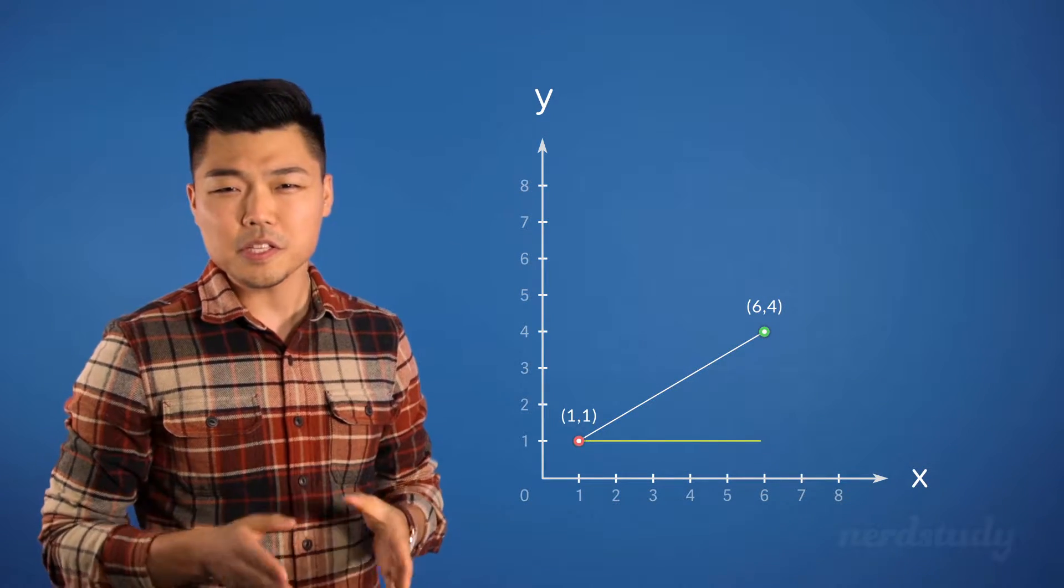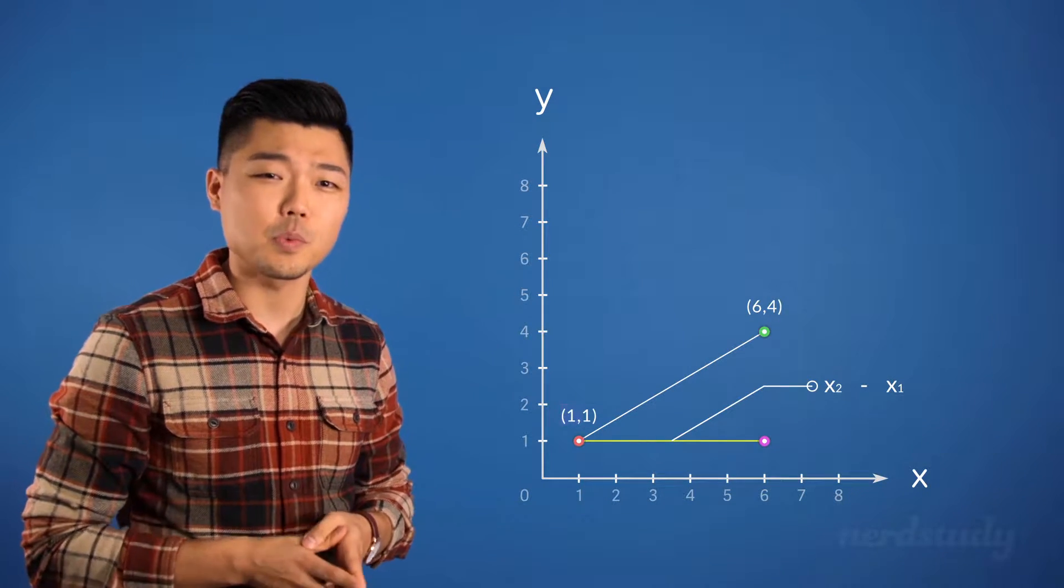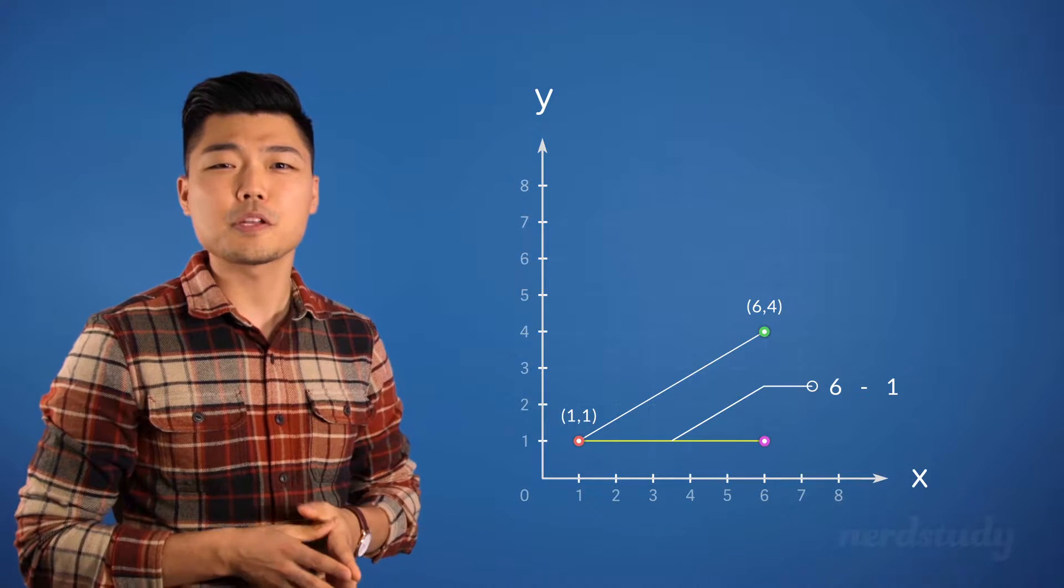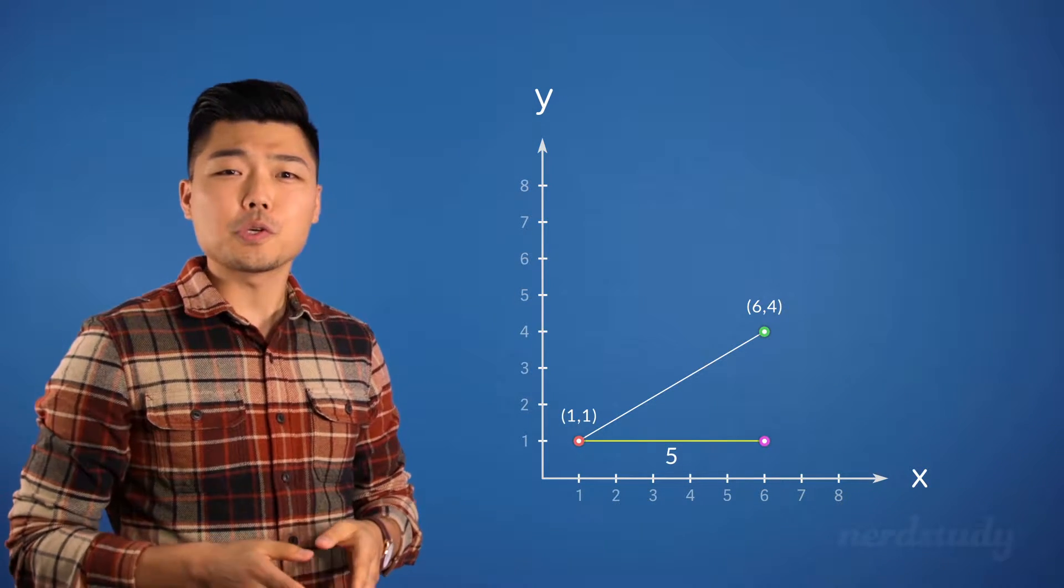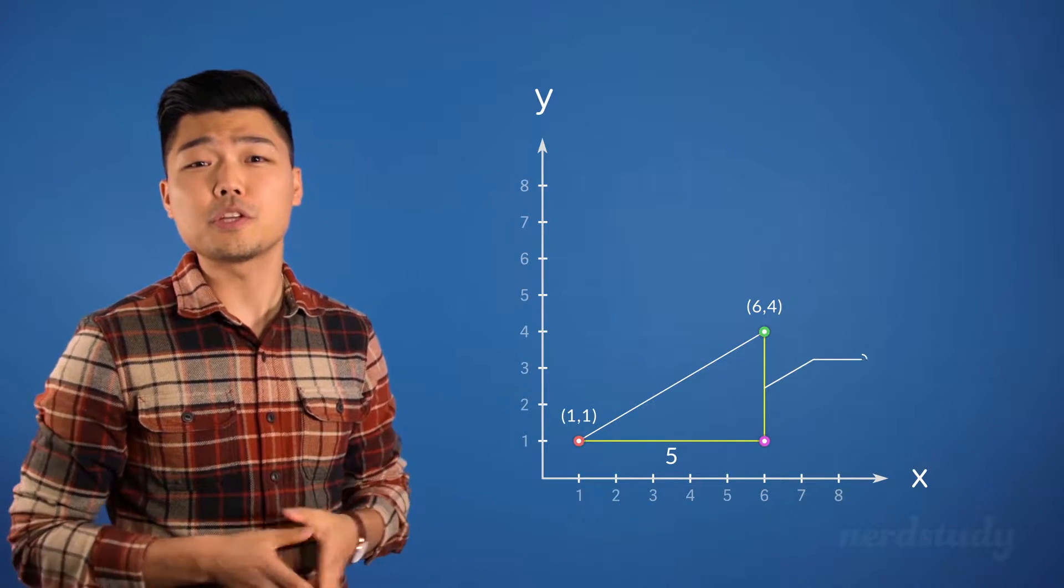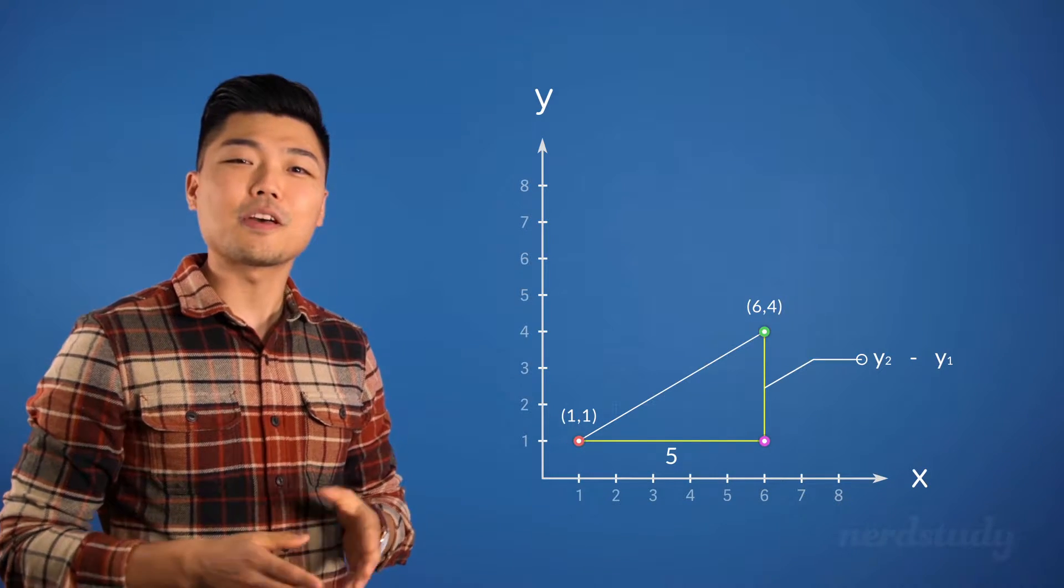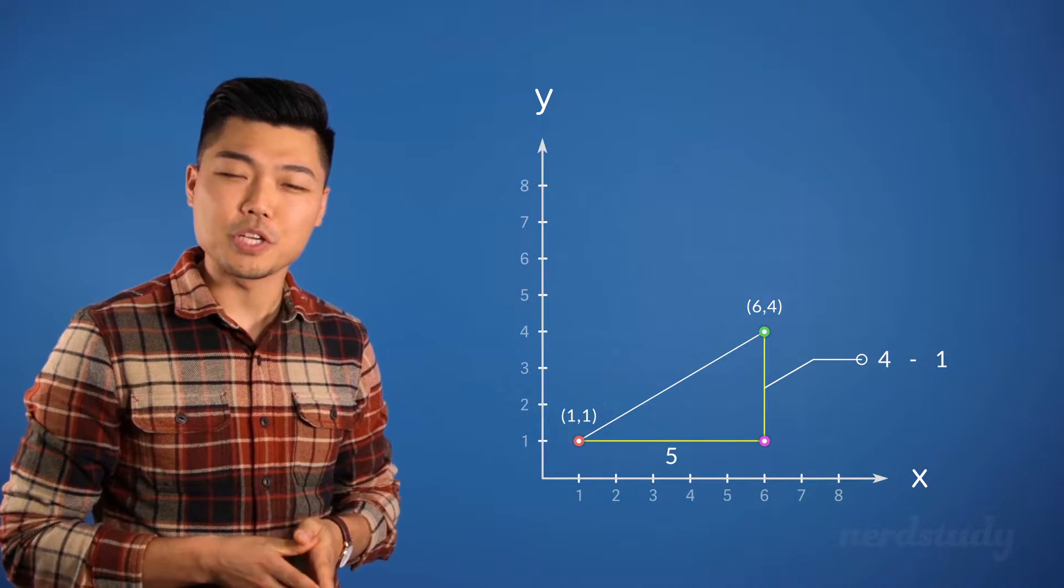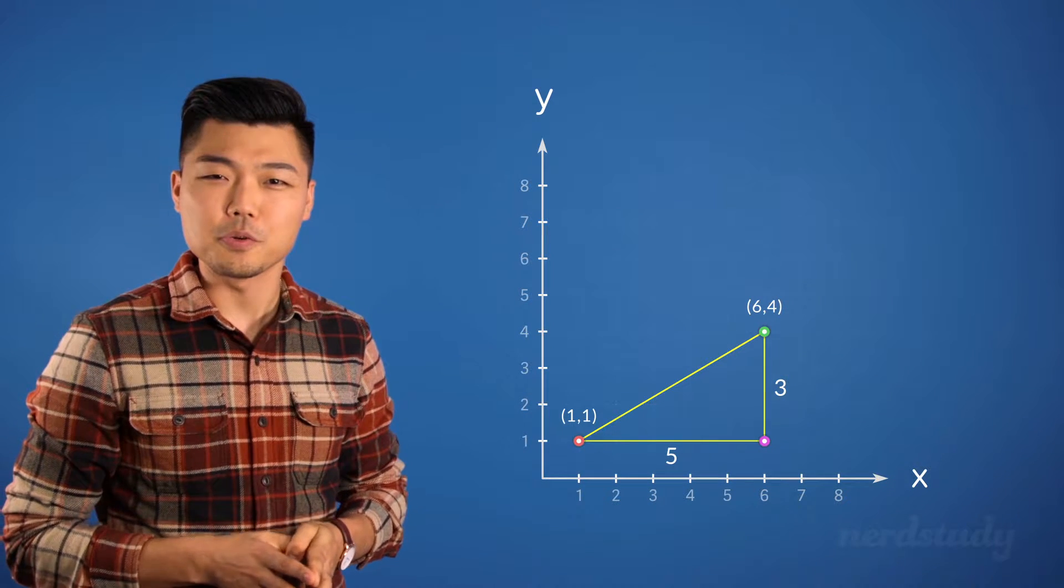We've got this leg here, which can be found by doing x2 minus x1. We would get 6 minus 1, which equals 5. We'd also get the leg length right over here, which we know we can do y2 minus y1, and we know right away that that would be 4 minus 1, which equals 3. And we will call this hypotenuse c.